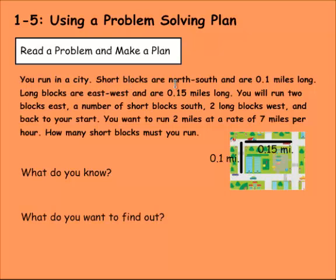We're going to read the problem and then make a plan here. So you run in a city. Short blocks are north-south and are 0.1 miles long. Long blocks are east and west and they run 0.15 miles long. You will run two blocks east, a number of blocks south, two long blocks west, and then back to your start. You want to run two miles, a total of two miles, at a rate of 7 miles per hour. How many short blocks must you run?